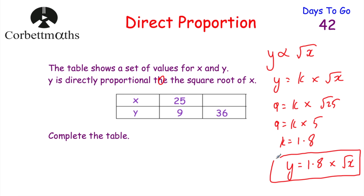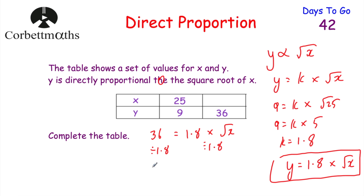I'm going to put a box around that formula because it's very important. Now the question asks us to complete the table — we need to find x when y equals 36. Substituting into y equals 1.8 times the square root of x: 36 equals 1.8 multiplied by the square root of x. Dividing both sides by 1.8 gives 20 equals the square root of x. So x must equal 400, because the square root of 400 is 20. Well done if you got that.